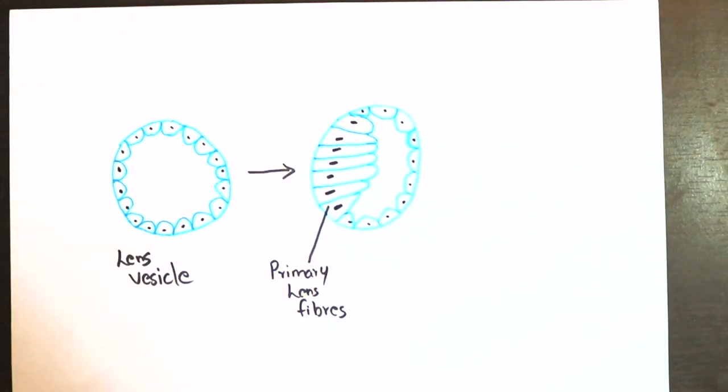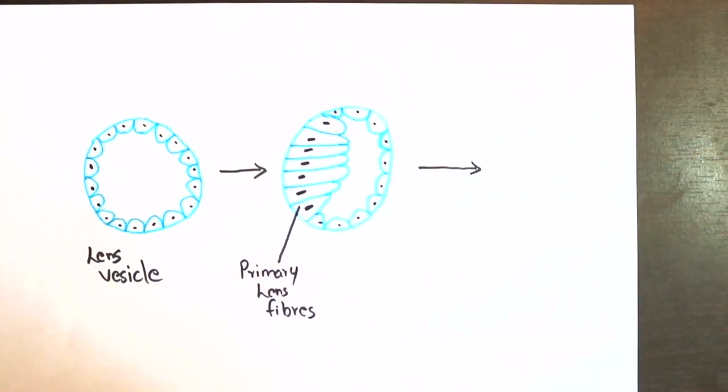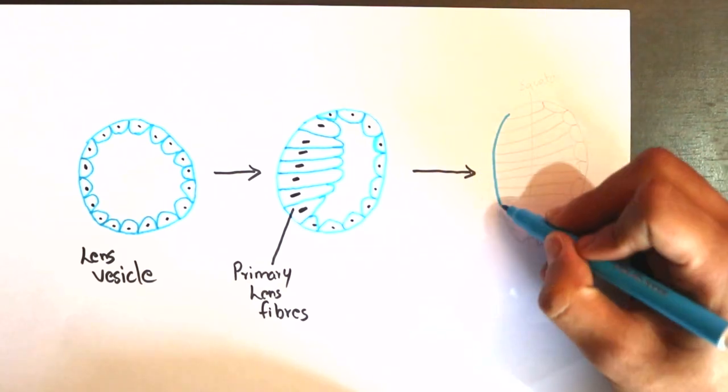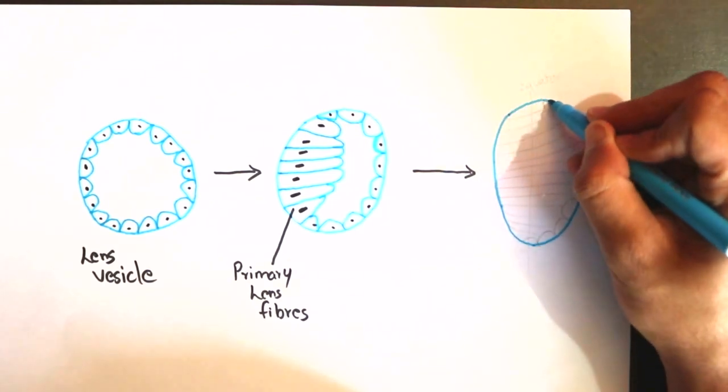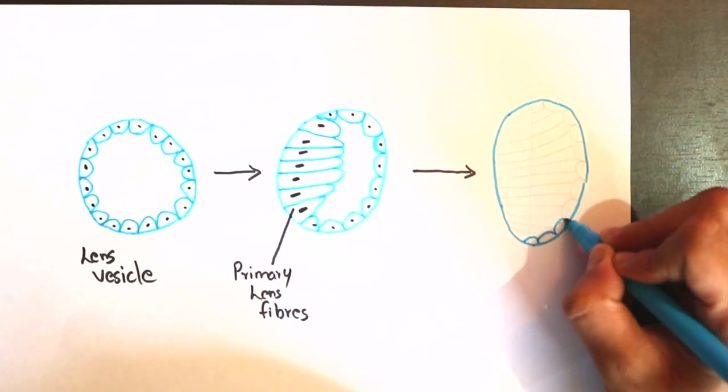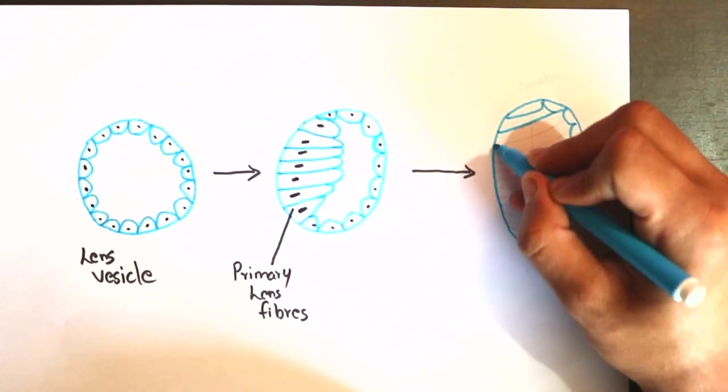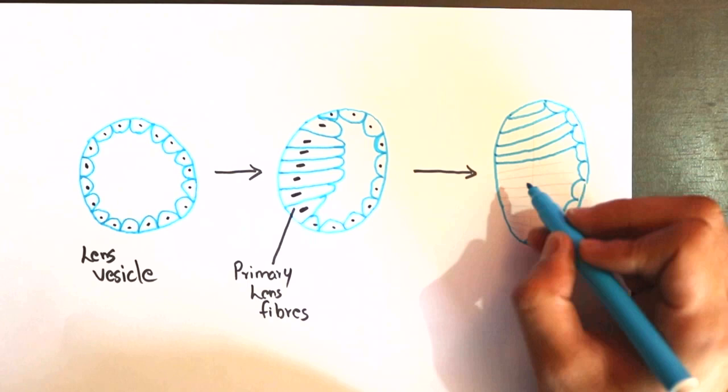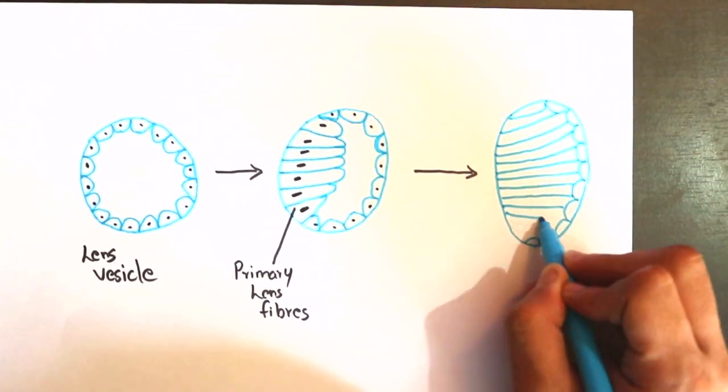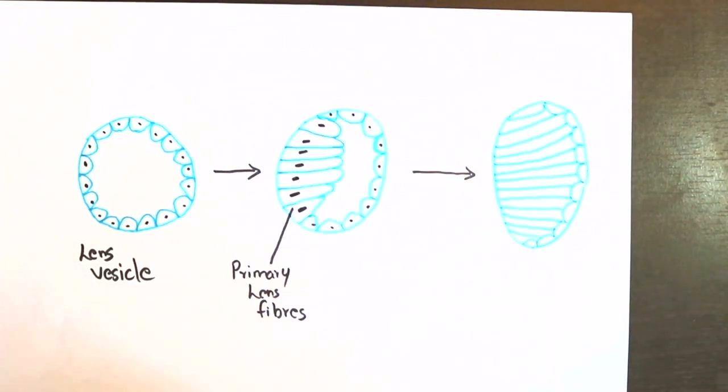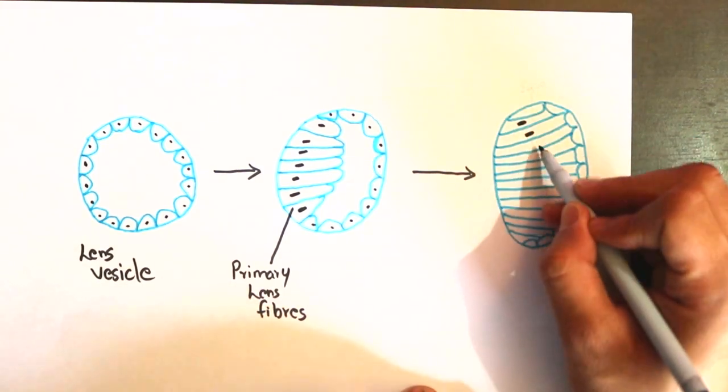Crystallin is a water-soluble structural protein found in the lens and cornea of the eye, accounting for the transparency of the structure. These elongating lens fibers eventually fill in the lumen of the vesicle, and they become the embryonic nucleus in the mature lens.